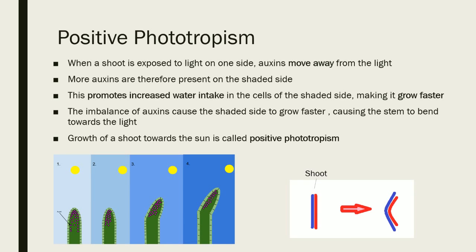Let's take a look at phototropism. When a shoot is exposed to light, the auxins will move away from the light. Therefore more auxins will be present on the shaded side, and this promotes increased water intake in the cells on that shaded side of the plant, making it grow faster. So there's an imbalance of auxins causing an imbalance in growth — the shaded side will grow faster and cause the stem to bend towards the light. The growth of a shoot towards the sun is called positive phototropism. Looking at the diagram, the sun is on the right-hand side, auxins accumulate on the shaded left side, which grows faster, and therefore the stem bends towards the sun.